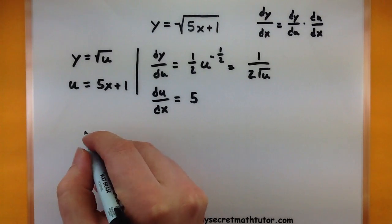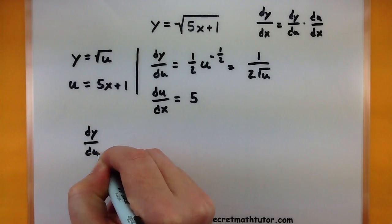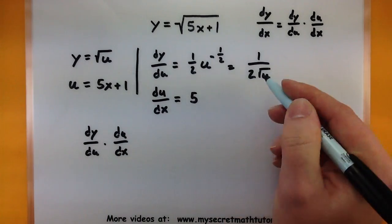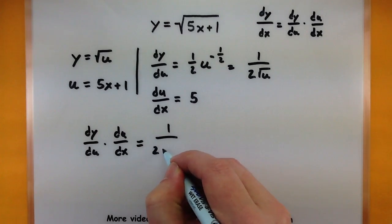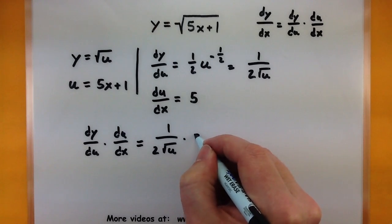So to figure out our overall result, we're going to take dy du and multiply it with du dx, which is essentially just these two guys here. So 1 over 2, the square root of u, there's our first one, multiplied by 5.